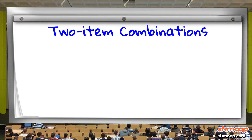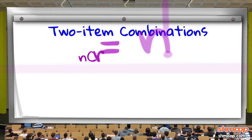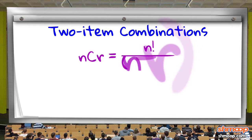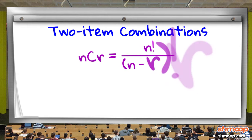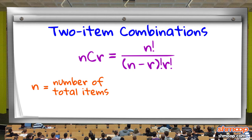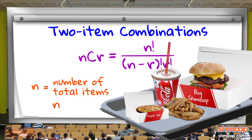To determine the number of two-item combinations, we can use the following formula: n choose r equals n factorial divided by n minus r factorial times r factorial.